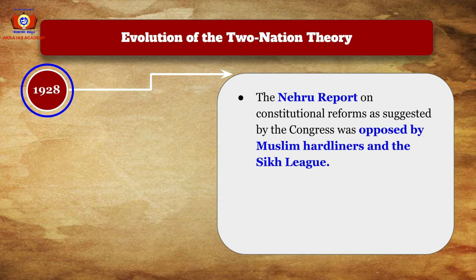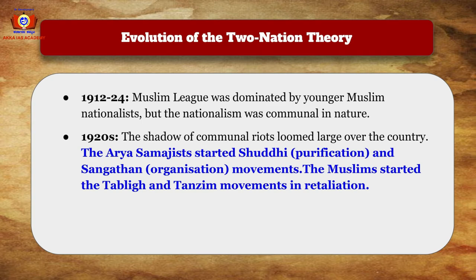In 1928, one of the most important events in Congress and nationalist history occurred: the Nehru Report was drafted and presented to the British government. However, this report as suggested by the Congress was opposed by Muslim hardliners and the Sikh League. During 1912–24, the Muslim League was dominated by younger Muslim nationalists, but this nationalism was communal in nature.